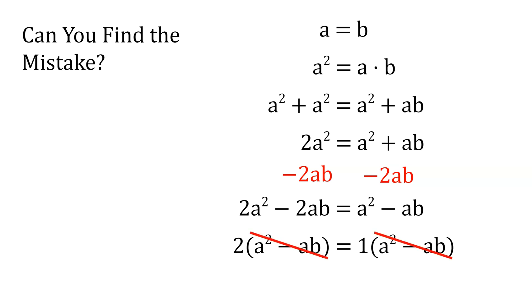And finally, we divide both sides by a squared minus ab, and we get 2 equals 1. Now clearly, this is an absurd proof. Where did the mistake happen? Pause the video to find out.